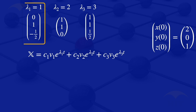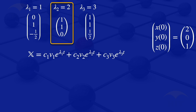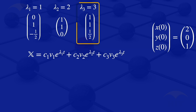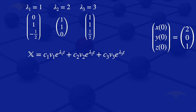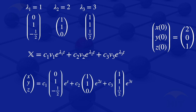For each eigenvalue and its corresponding eigenvector, we substitute into the general solution formula. Doing the substitutions, we get that the column vector (x, y, z) equals c1 times (0, 1, -1/2) times e^t plus c2 times (1, 1, 0) times e^(2t) plus c3 times (1, 1, 1) times e^(3t).